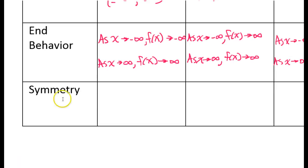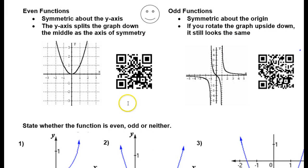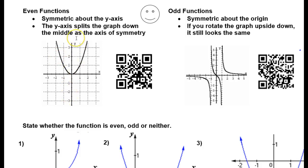Now let's talk about symmetry. When we're talking about function symmetry, we mean: is the symmetry even, odd, or neither? Even symmetry means the function is symmetric about the y-axis, so the y-axis splits the graph right down the middle. A parabola like this is going to be an even symmetry function.